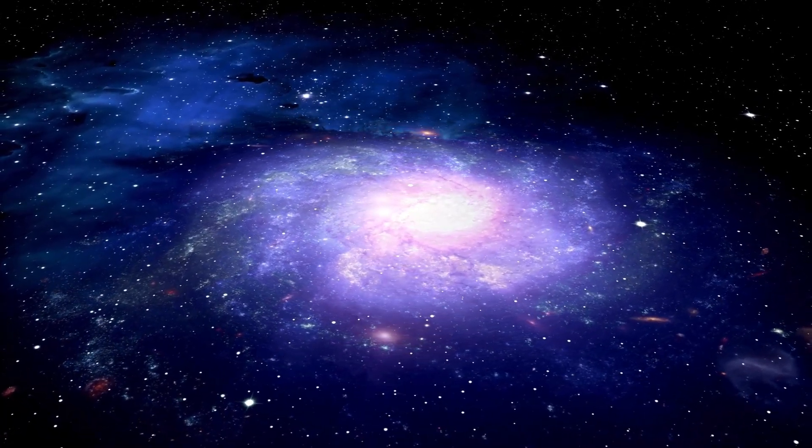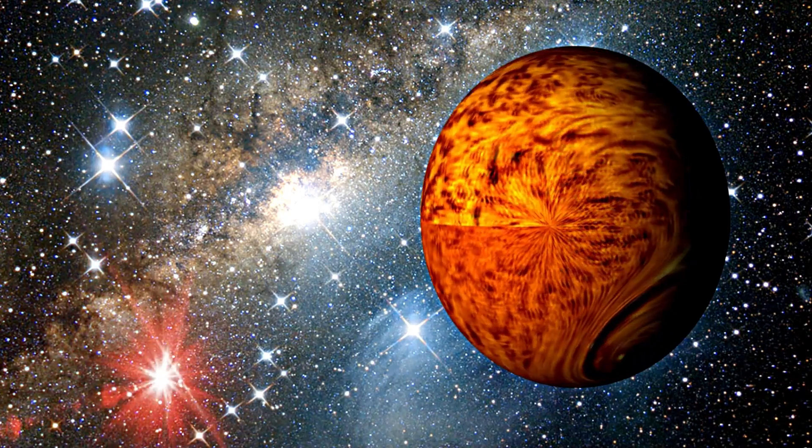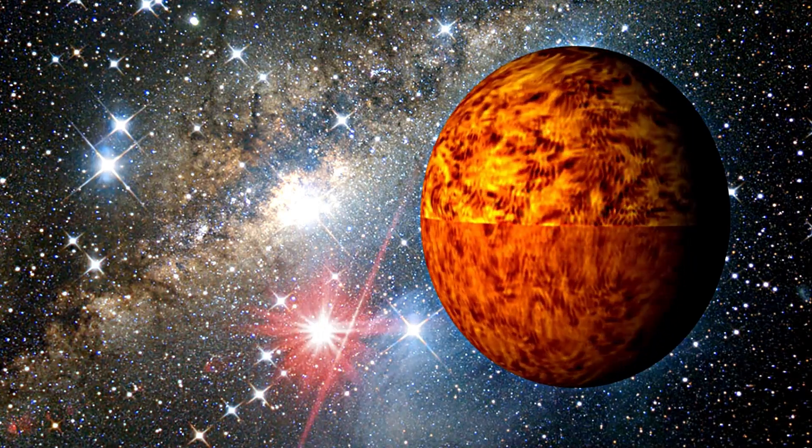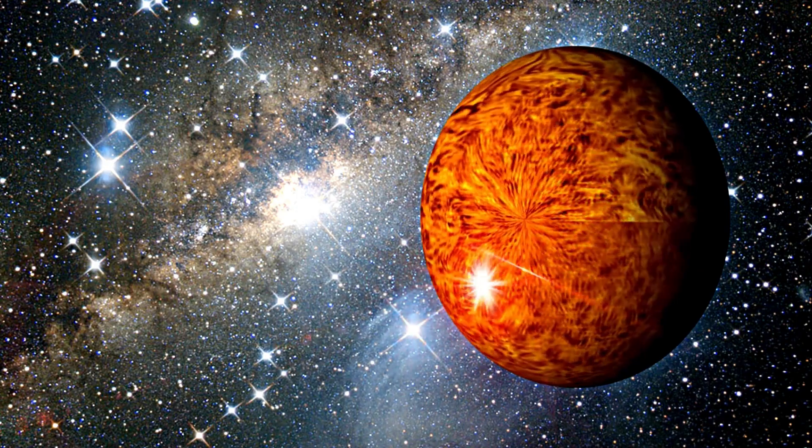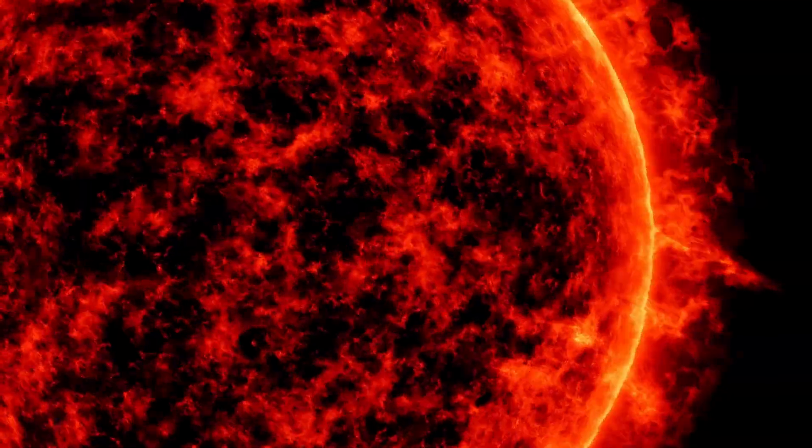Betelgeuse, around 650 light-years away in Orion, isn't just any star. It's a red supergiant, incredibly bright, over 100,000 times brighter than our sun. But why does it matter?